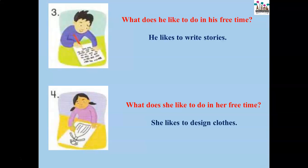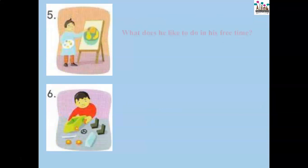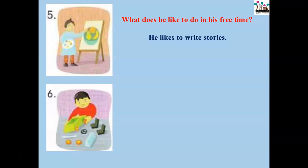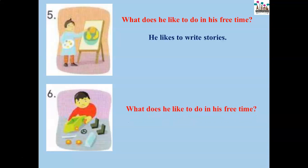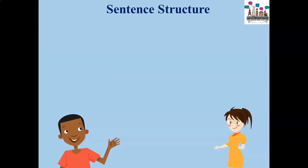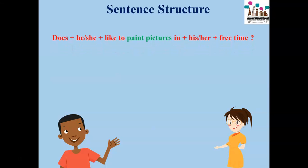Number four: What does she like to do in her free time? She likes to design clothes. What does he like to do in his free time? He likes to write stories. What does he like to do in his free time? He likes to make models. Now let's look at another sentence structure.